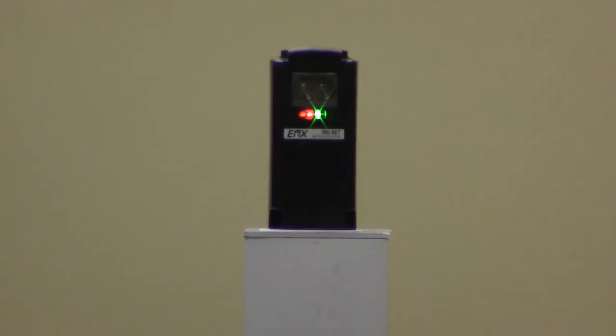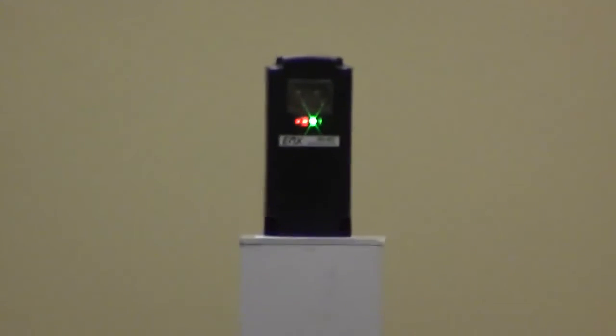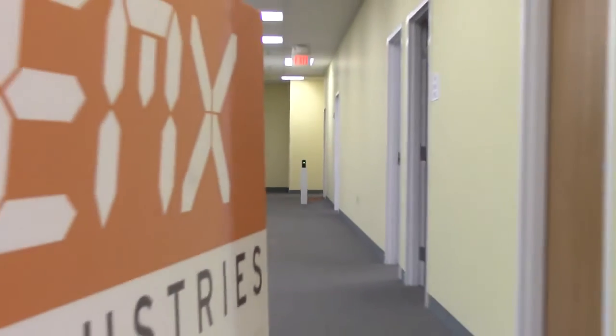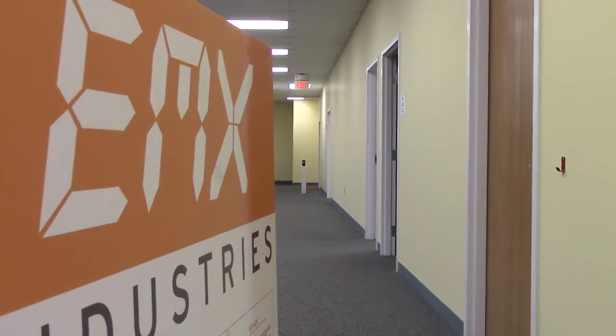This is a demonstration of the IRB-RET retroreflective photo-eye. We're going to measure the excess gain at the maximum rated distance of 60 feet. Excess gain is a measurement of light energy over and above the minimum amount required to operate the photo-eye. The extra light, the extra sensing energy, is used to overcome signal reduction caused by rain, fog, or snow.